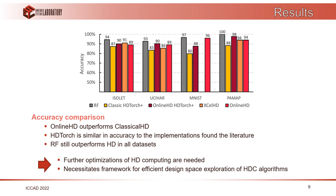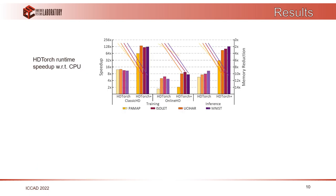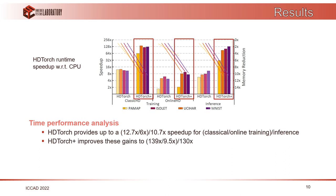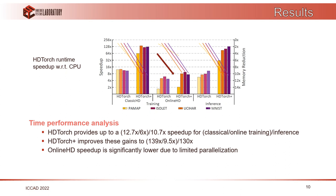This also highlights the need for a framework for efficient design space exploration of HD algorithms. Looking at speedup compared to CPU across four benchmark datasets for classical learning, online learning, and inference: HDTorch using PyTorch already provides speedup, but with CUDA extensions the speedup improves to up to 140x for classical training, 10x for online training, and 130x for inference. The online HD speedup is significantly lower due to limited parallelization, since in online HD we must add sample by sample, multiplied by a novelty weight, rather than processing in batches.